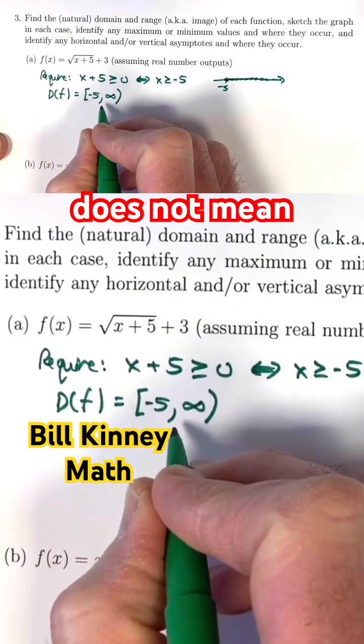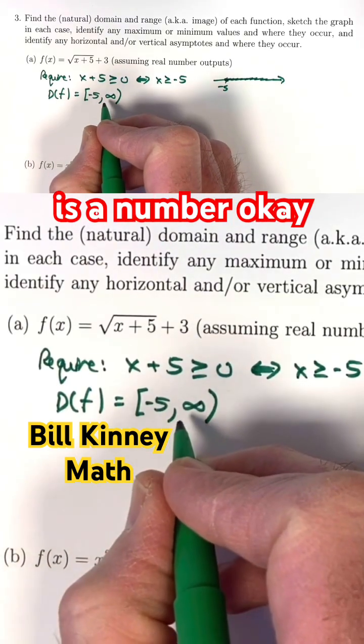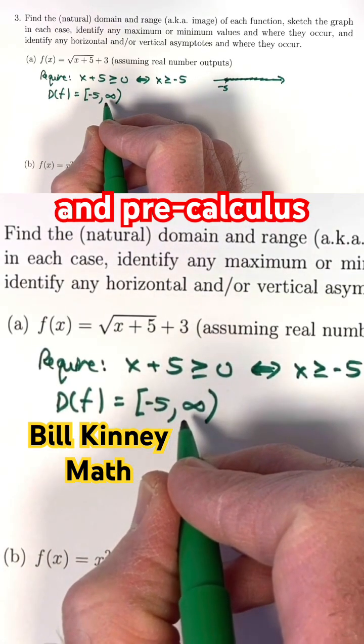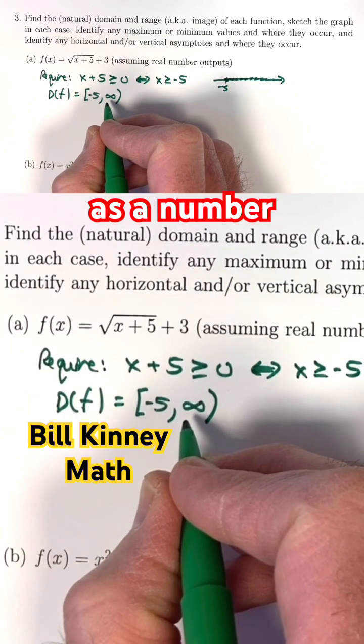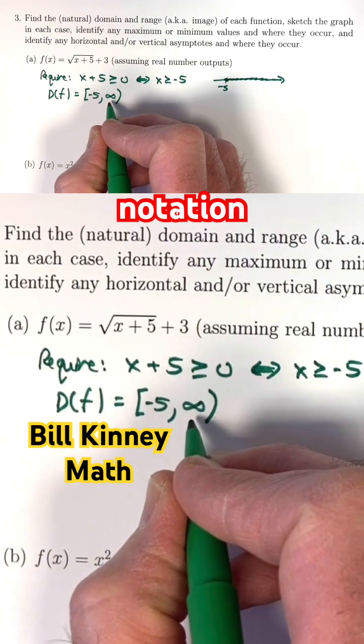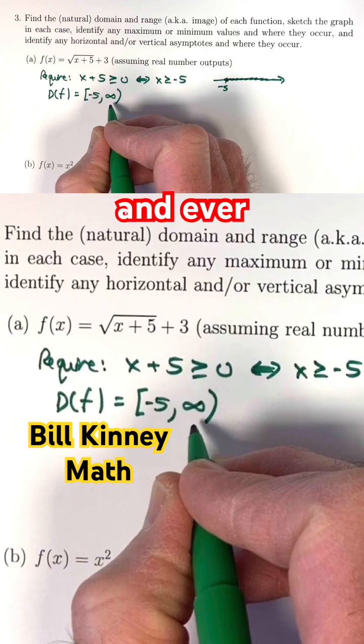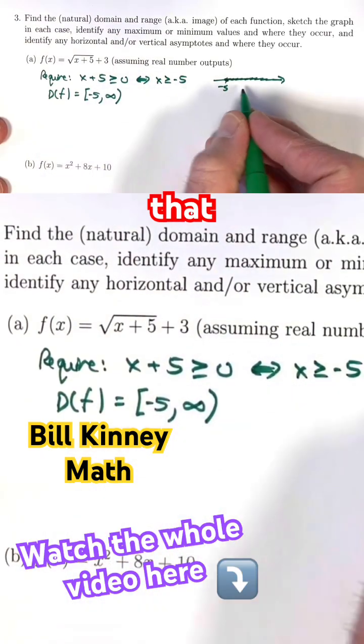What does this mean? It does not mean infinity is a number. In a calculus and pre-calculus class, you don't treat infinity as a number. It's just shorthand notation to mean go to the right forever and ever, never stop. That would be the domain.